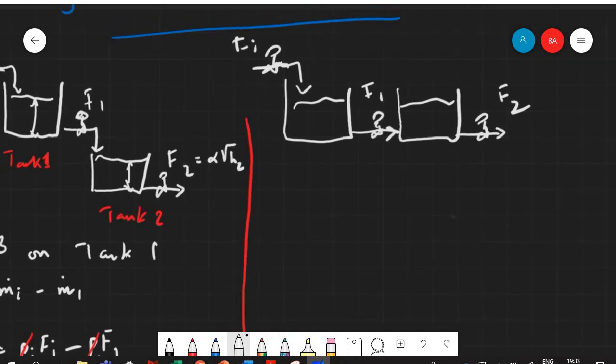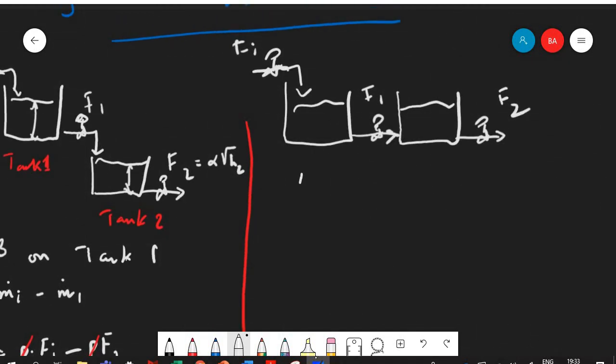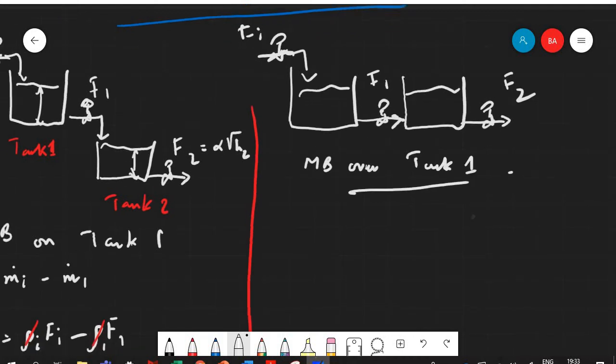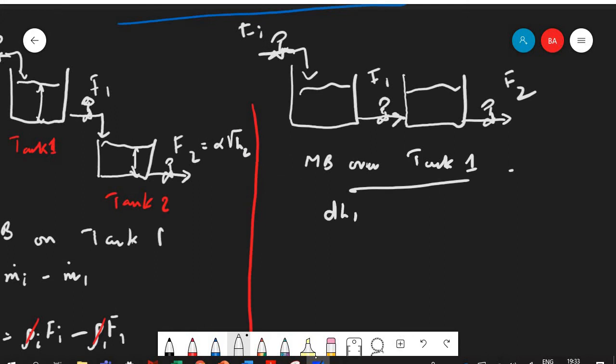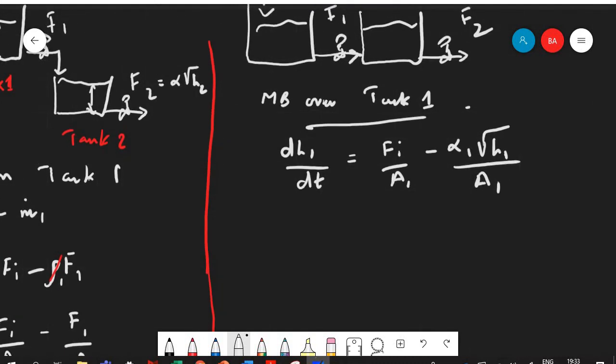In this case, if we do the mass balance over tank 1, you are going to have exactly the same equation that you already have written so I'm not going to do this again. dh1 by dt is equal to Fi over A1 minus α1 square root of h1 over A1. So this is what we have for tank 1.